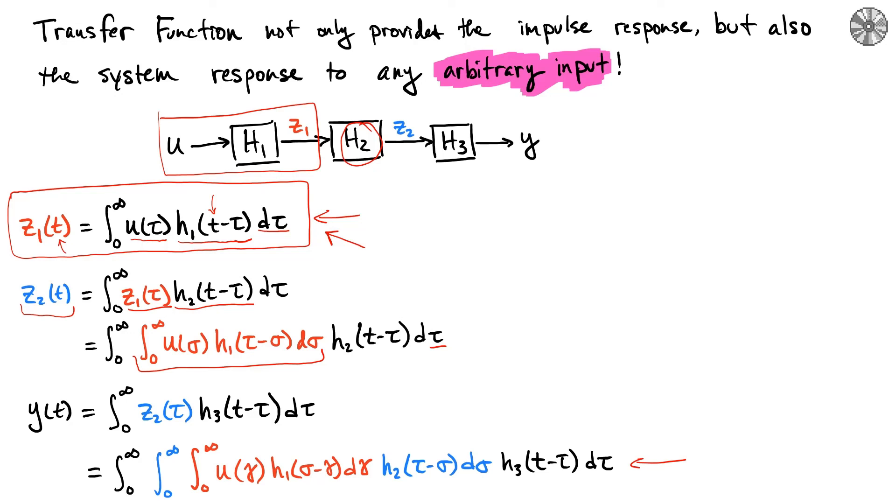This tells us that using the impulse response or transfer functions h1, h2, and h3, we can compose the output y(t) in terms of only the input u and all these transfer functions—we don't have explicit dependence on intermediate signals. In class, we'll see how the Laplace transform greatly simplifies the mathematics here. The Laplace transform transforms this super nasty integration into a very simple multiplication.